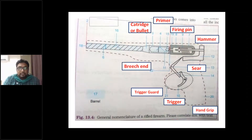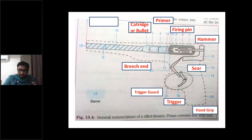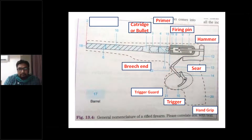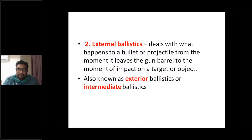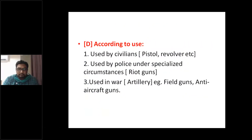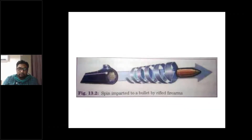You have to remember the sear, firing pin, and primer. The primer is the part of the cartridge where the firing pin strikes to produce a spark, igniting the gunpowder. The muzzle is the front tip end of the barrel, and the breech end is where the gun is opened to load cartridges. Rifling induces important effects on the bullet.